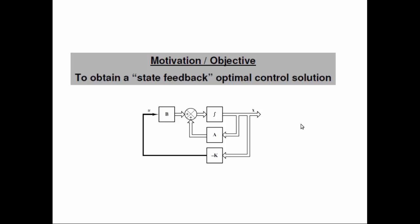The motivation for the Hamilton-Jacobi-Bellman equation is to obtain the solution for the state feedback problem. The general form in linear control is u = -Kx, a linear combination of the states. From classical and modern control techniques for linear systems, we know how to find K using pole placement or Lyapunov techniques for optimality.